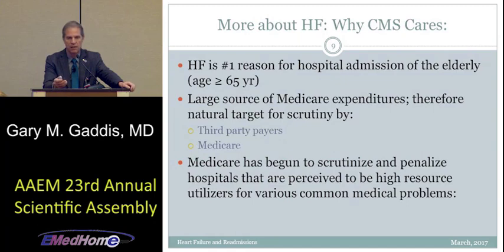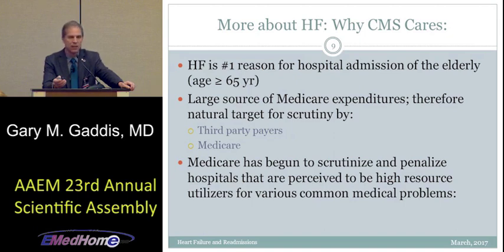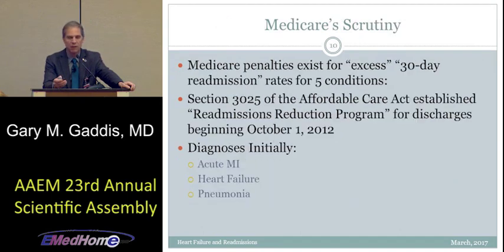Heart failure is the number one reason hospitalization of the elderly occurs. Therefore, looking at heart failure and making its care more efficient is a logical target for third-party payers like Medicare and private insurance companies. We're seeing scrutiny of heart failure care, including readmissions, because it's such a common problem. Heart failure is one of the conditions for which Medicare penalties to the hospital can accrue if the hospital has what are deemed to be excess readmissions.